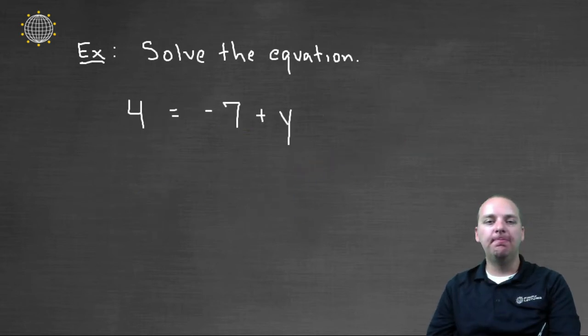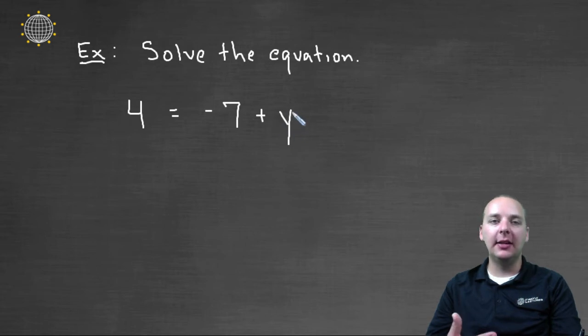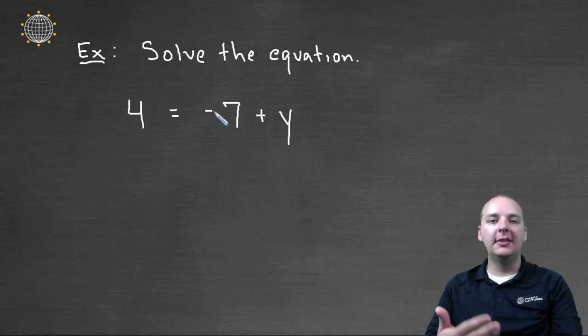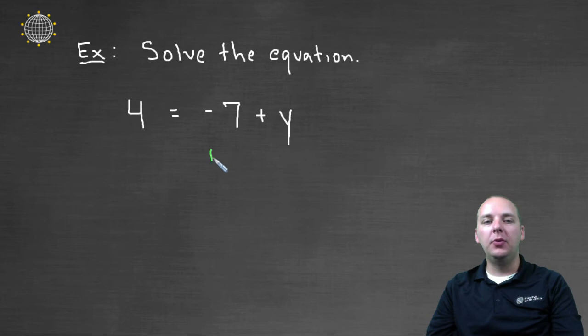Let's try another one. Let's say we have the equation four equals negative seven plus y. I'd like to isolate the y. I'd like to solve for y. Right now I have an extra negative seven on the right hand side that I don't want. This is like subtracting seven that I don't want on the right hand side.